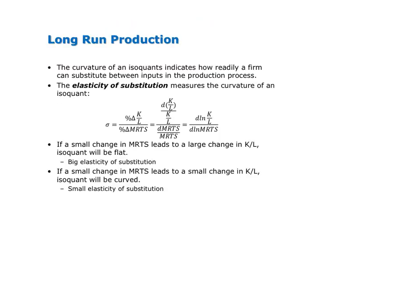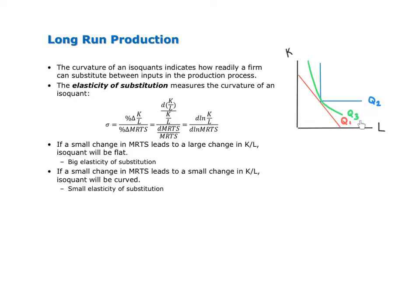The curvature of an isoquant indicates how easily a firm can substitute between inputs in the production process. Recall from the production video that for an isoquant with no curvature, or a linear downward sloping isoquant, input substitutability is as high as it can get. As the isoquant gets curvier, becoming L-shaped, input substitutability decreases. So for isoquant Q1, input substitutability is as high as it can be; for isoquant Q2, it's as low as it can be; and for isoquant Q3, it's somewhere in between those two extremes.